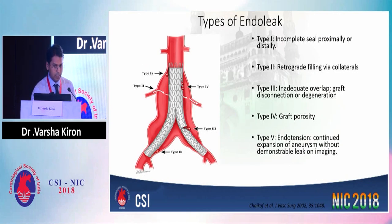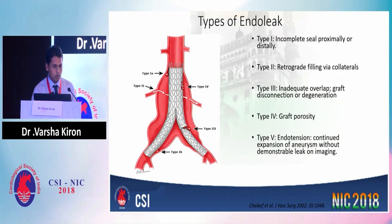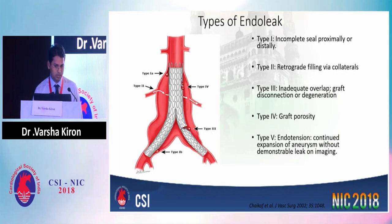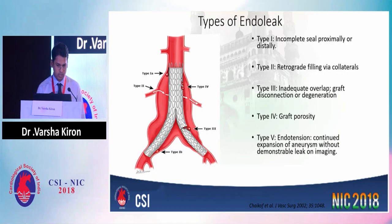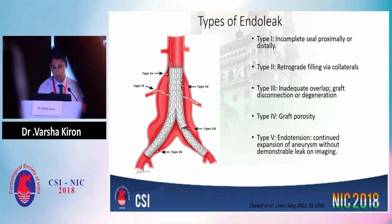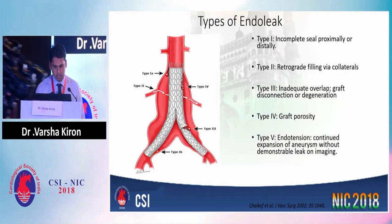A brief overview of types of endoleak: Type 1 is when you have an incomplete seal proximally or distally, almost always evident at the time of completion of the procedure. Type 2 endoleak develops later due to retrograde filling via collaterals. Type 3 endoleak occurs when there is inadequate graft overlap or graft degeneration. Type 4 is seen at end of procedure owing to graft porosity and settles over time. Type 5, used by some authors, is endotension — continued filling of aneurysm without any demonstrable leak on imaging.